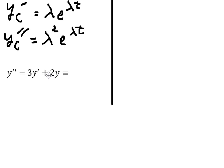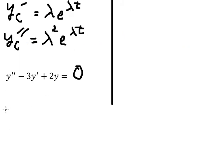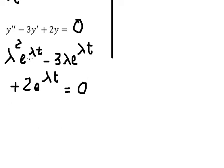Because this is the complementary solution, the right-hand side equals zero. Substituting in, we have λ²·e^(λt) minus 3λ·e^(λt) plus 2·e^(λt) equals zero. We can factor out e^(λt) to simplify.